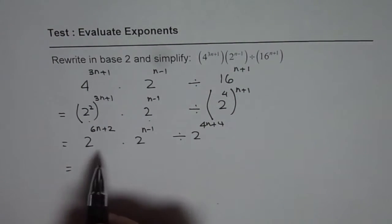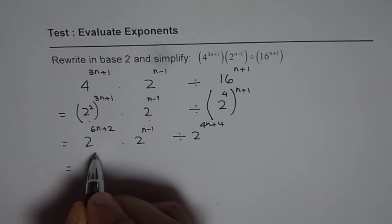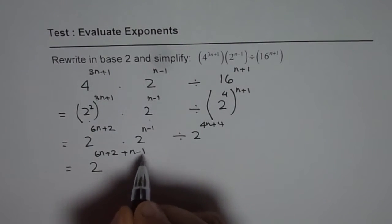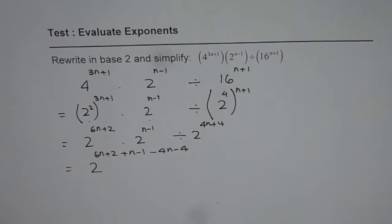Now let's apply the product and quotient rules. So we'll add these exponents. We'll get 2 to the power of 6n plus 2, add them up, n minus 1, subtract these, minus 4n minus 4.